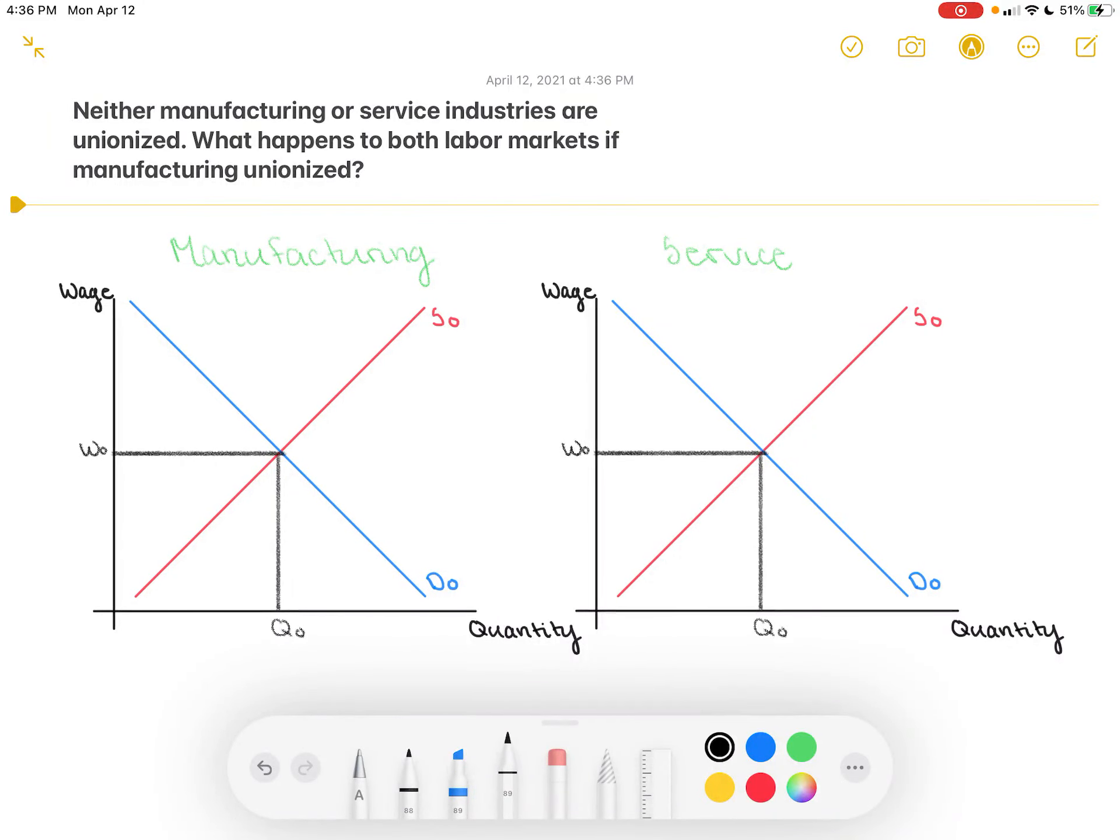Let's take a look at the effect of unions on two different industries, manufacturing and service. We're supposing initially that neither is unionized, so you can see their equilibrium quantities and wages as they're depicted right here.